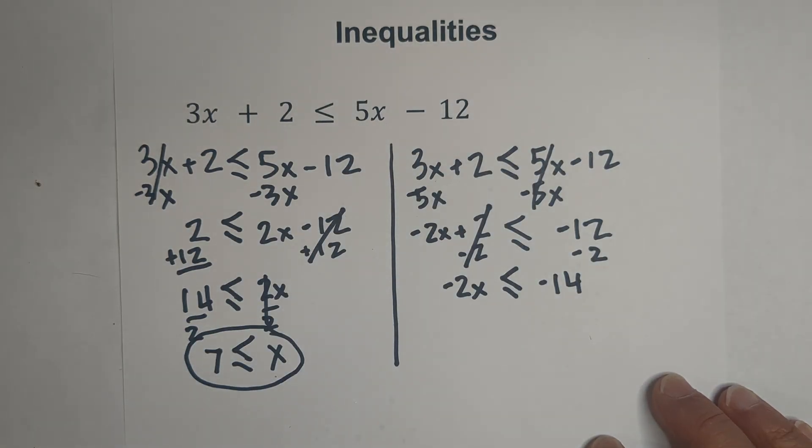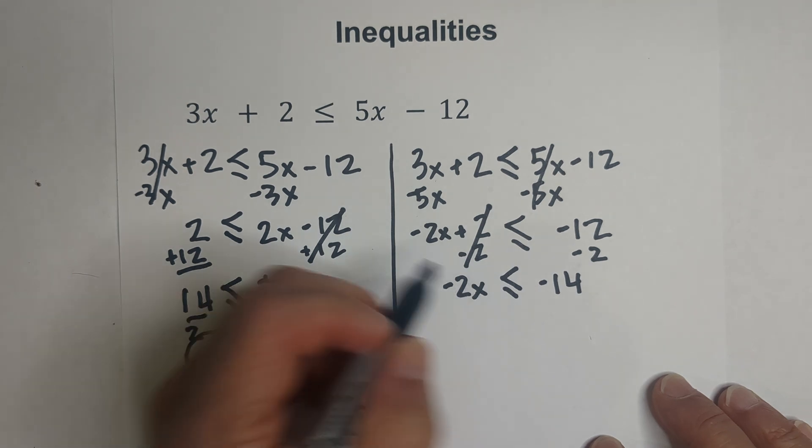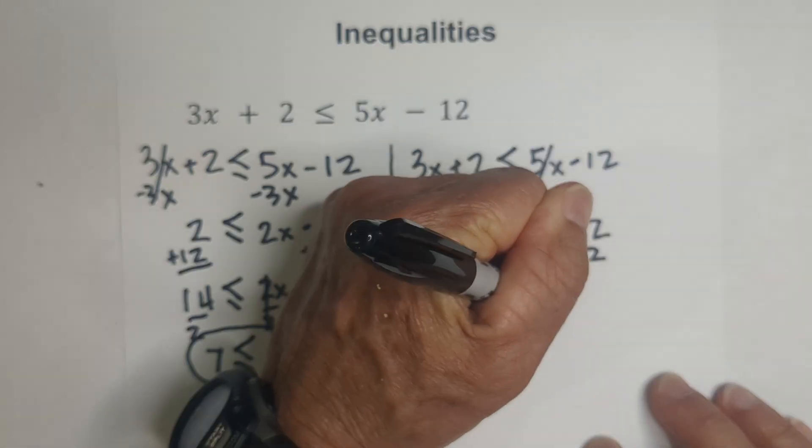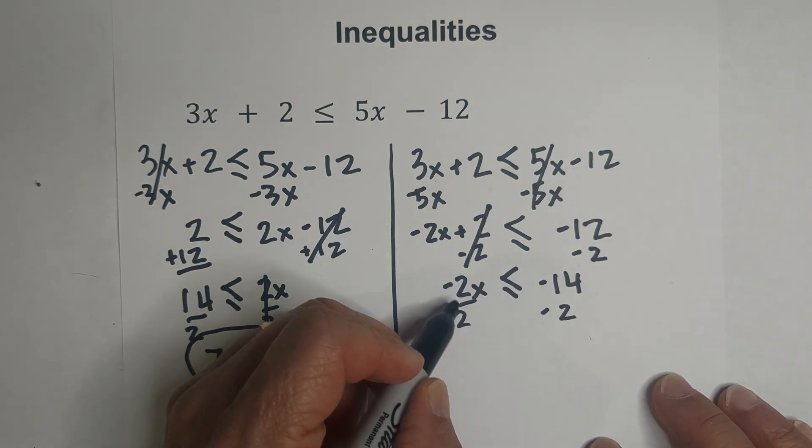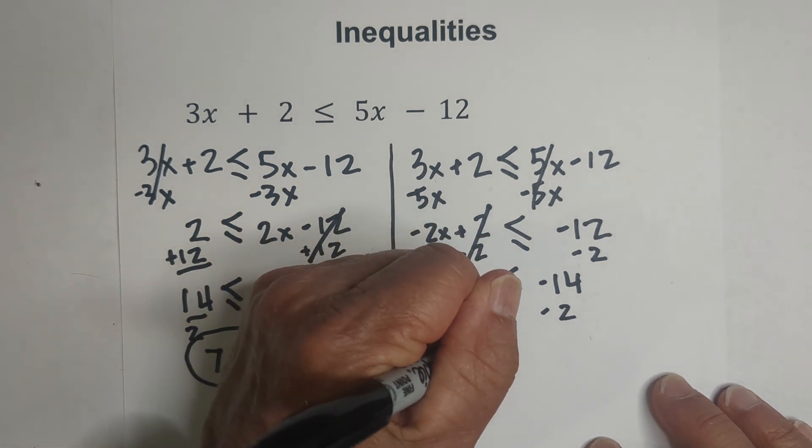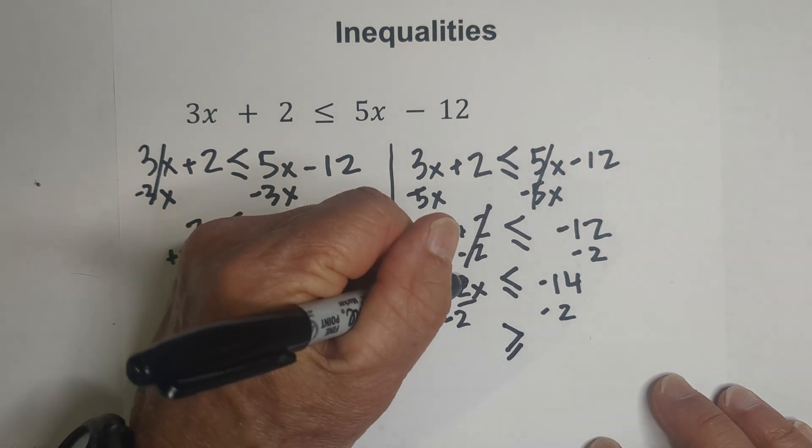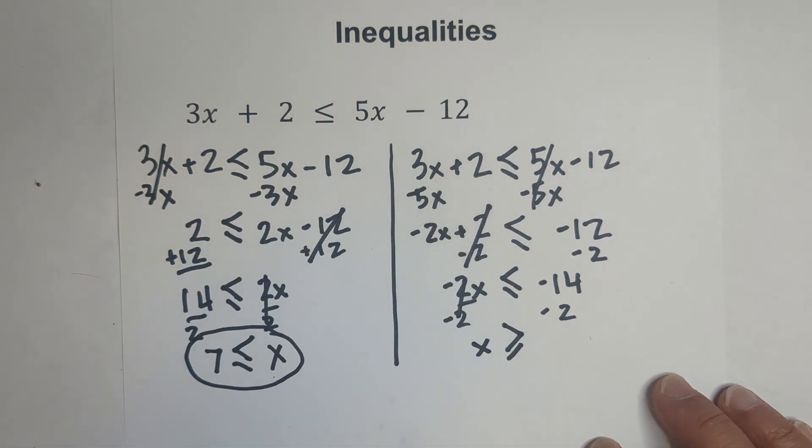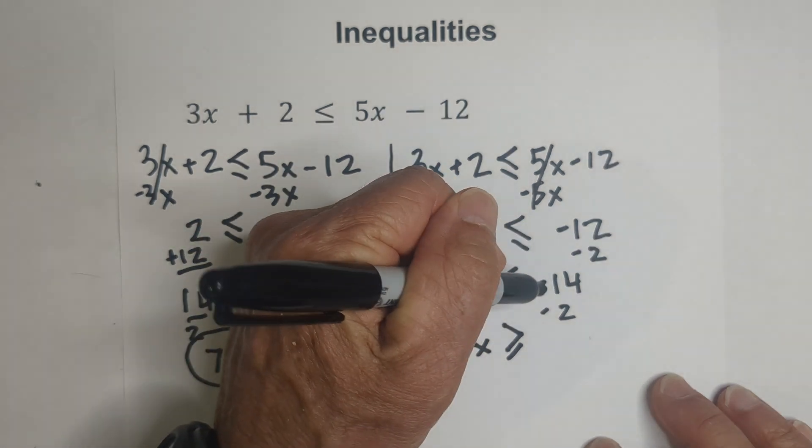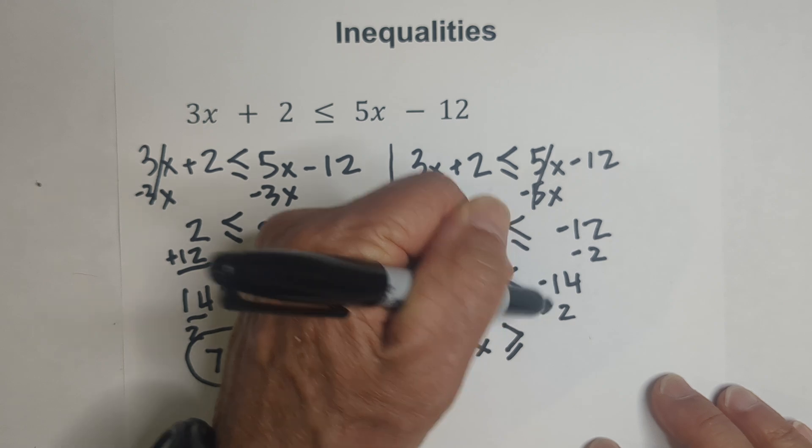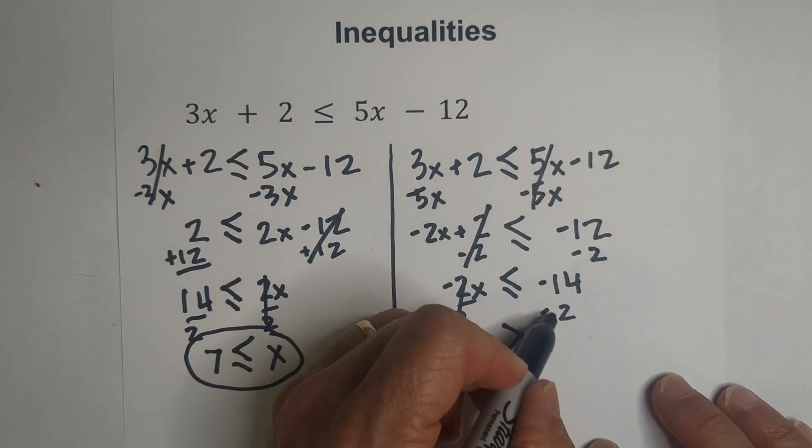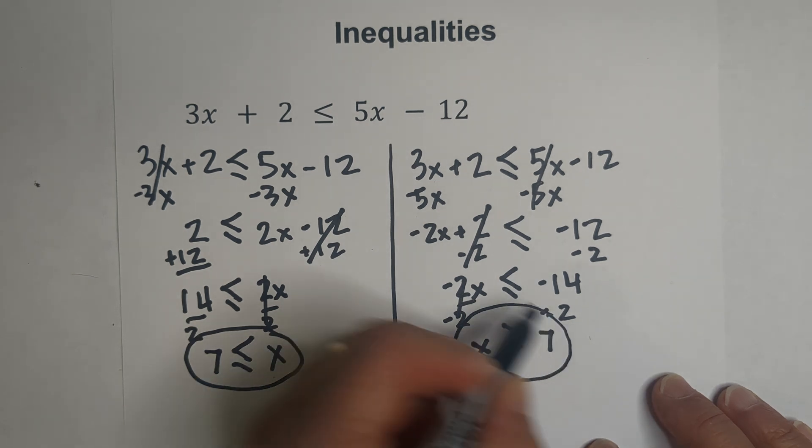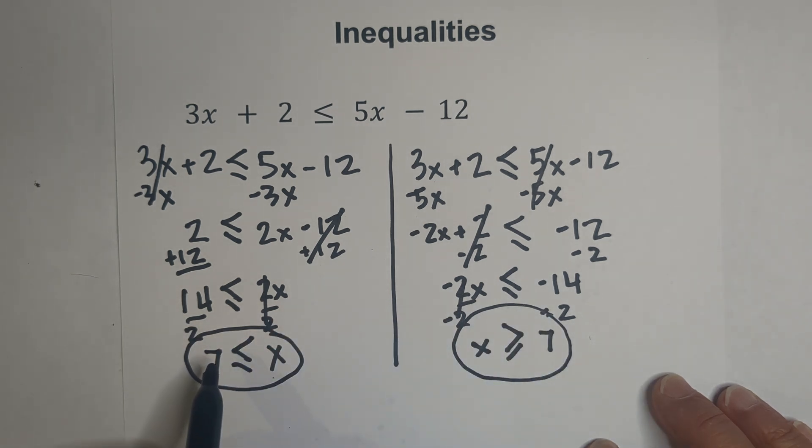Now we need to get x by itself, so we're going to divide through by a negative 2. However, when you divide through by a negative coefficient, you flip the sign. So these cancel, that gives you x. Negative 14 divided by negative 2 is now a positive 7. And notice that you get the same answer as what we had over here, because x is greater than or equal to 7.